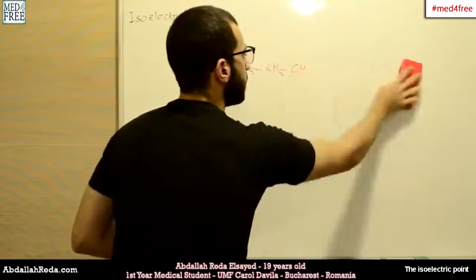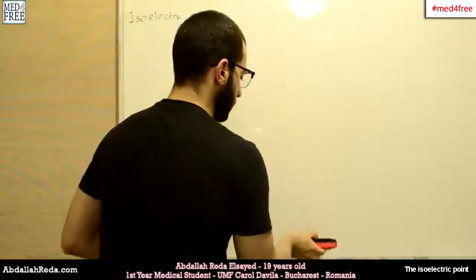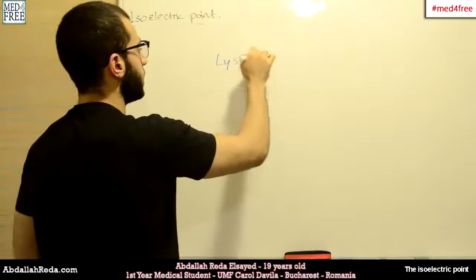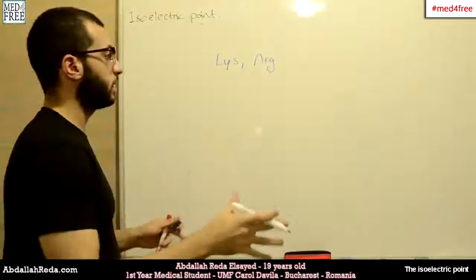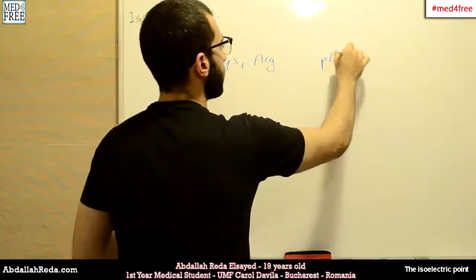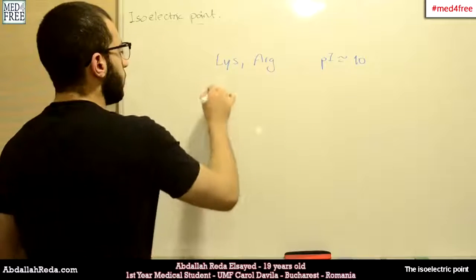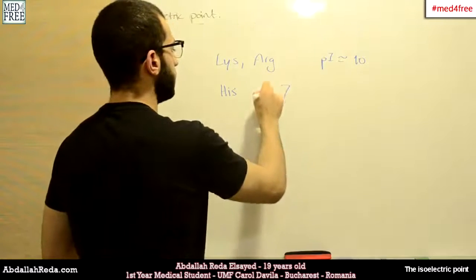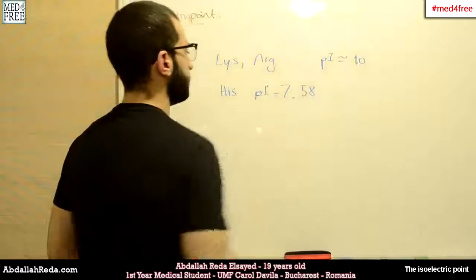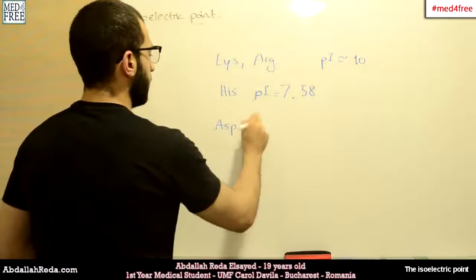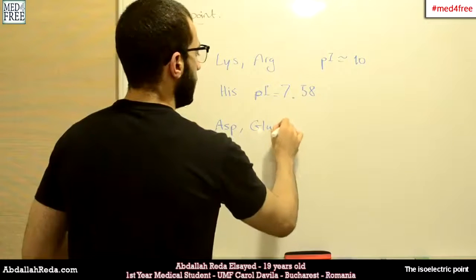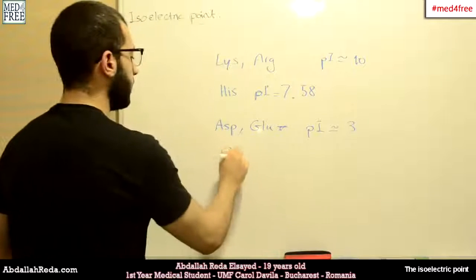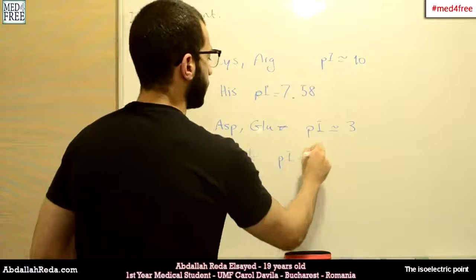From this we can summarize the PI values for amino acids. For lysine and arginine, which are di-amino monocarboxylic amino acids, the PI is around 10. For histidine, which is a specific case, the PI equals around 7.58. For aspartic acid and glutamic acid, the PI equals around 3. And for the rest of amino acids, the PI equals around 6.